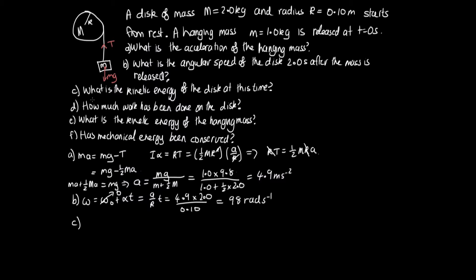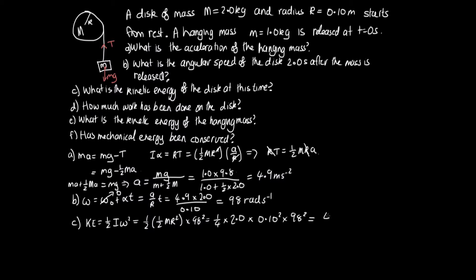For part c, the kinetic energy of the disk is KE = ½Iω². Since I = ½Mr² for a disk: KE = ½ × ½ × 2.0 × (0.10)² × 98² = ¼ × 2.0 × 0.01 × 9604 = 48 J.